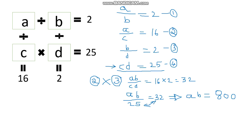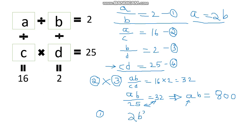From equation number 1, a equals 2b. Substituting a = 2b into a·b = 800: 2b × b equals 800, so 2b² equals 800. Dividing both sides by 2, b² equals 400, which gives us b equals 20.